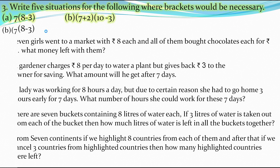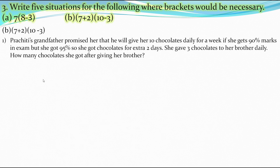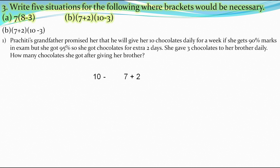Now let's write situations for the second expression: (7+2)×(10−3). The first situation: Prachit's grandfather promised her 10 chocolates daily for a week (7 days). Since she got 95% marks instead of the required 90%, she got chocolates for 2 extra days, so we add 2 to 7. She gave 3 chocolates to her brother daily, so we subtract 3 from 10. To find how many chocolates she got, we put both expressions in brackets and multiply, matching (7+2)×(10−3).